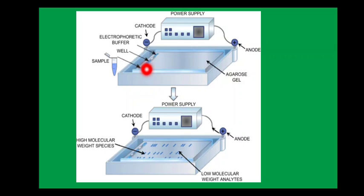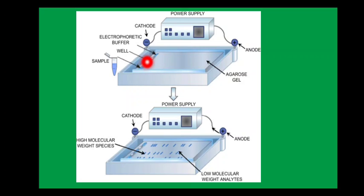Since DNA is negatively charged, it will move toward the anode, which is the positively charged electrode. The DNA molecules move from cathode to anode. After some time, you will find bands in the gel — some bands will go farther and some will not, based on their size. Smaller fragments are lighter, so they move faster and travel farther.